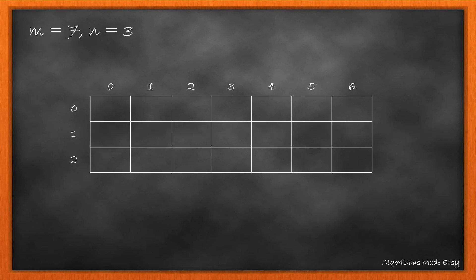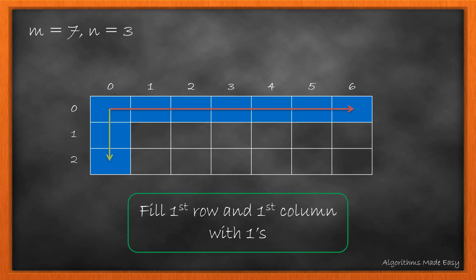Let's take this example with m as 7 and n as 3. We'll be using DP to solve this question. So let's take a DP matrix of size m cross n. We can say the robot could travel through the first row or the first column in only one unique way — by either moving right throughout the row or by moving down throughout the column. So we can fill these with ones.